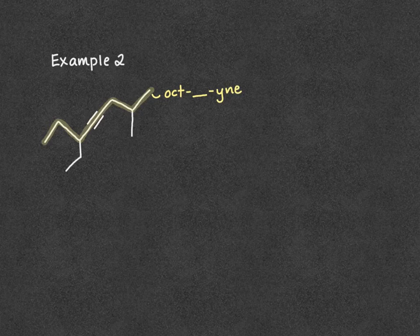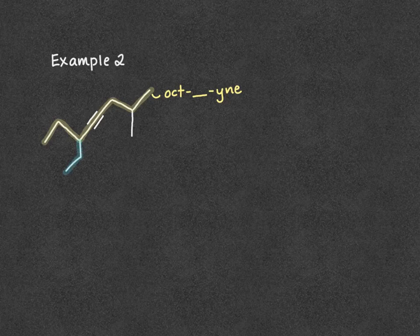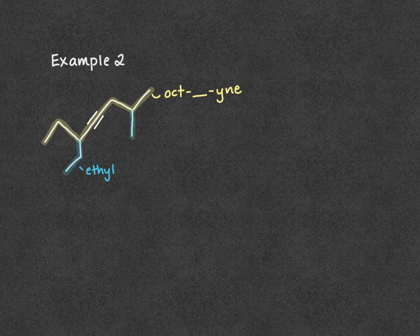Next, we're going to identify any branches. So we have two branches - on the left side of the molecule we have an ethyl, and on the right side of the molecule we have a methyl.